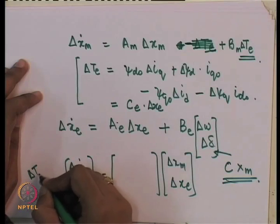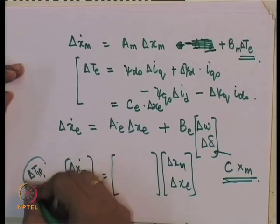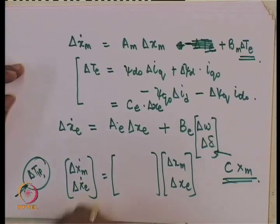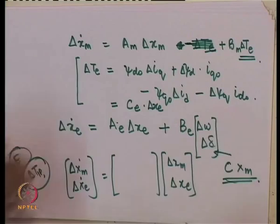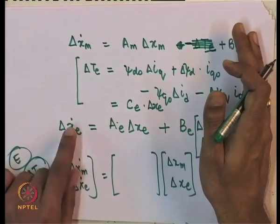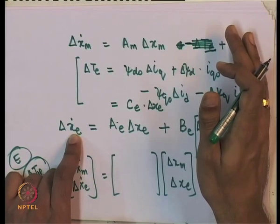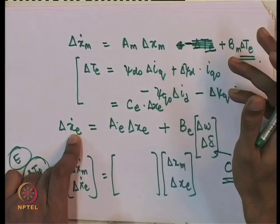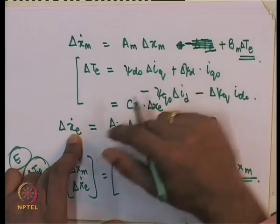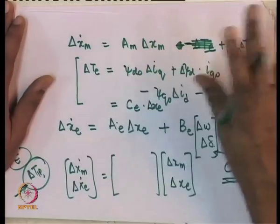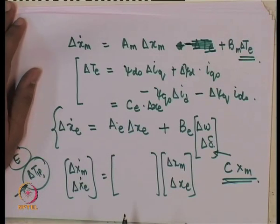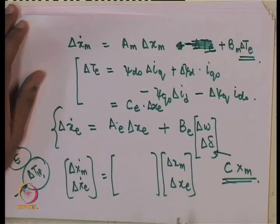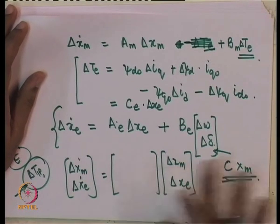You have to couple these two equations and get one grand state matrix. Assuming mechanical power torque inputs to all turbines are constant and the infinite bus voltage is constant, this is how you formulate your equations. This is absolutely general — you can relax all assumptions relating to transmission line resistance, rotor fluxes, and the simplification that x_d_double_dash equals x_q_double_dash.